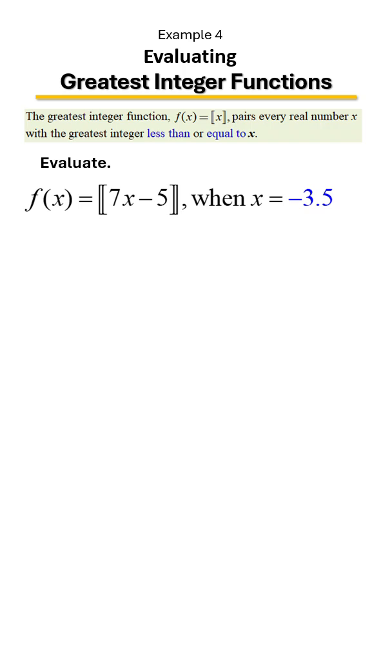Here we're going to evaluate this greatest integer function. We're asked to plug in negative 3.5 in x's place, so let's go ahead and do that. Once we do that, we then need to multiply because notice anytime they are sandwiched together, that means they're being multiplied.